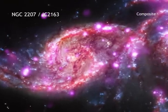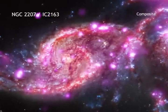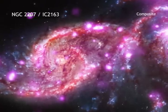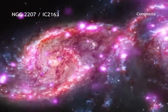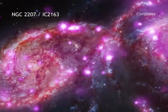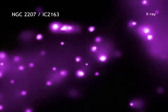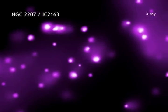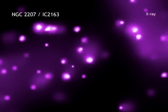This galactic pair has also produced one of the most bountiful collections of super-bright x-ray lights known. These special objects, officially known as ultraluminous x-ray sources, or ULXs, have been found using data from NASA's Chandra X-ray Observatory.